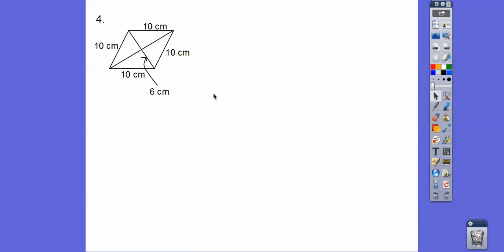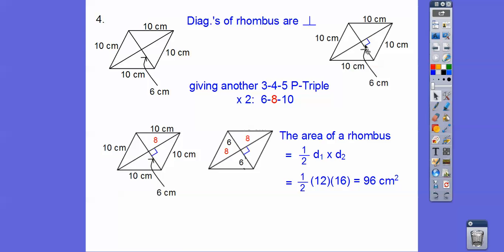Alright, so this one is a rhombus. It's a rhombus because all four sides are congruent. And when it's a rhombus, the diagonals are perpendicular. So it's a right angle. So we get another 3, 4, 5 P-triple. This is 6, we'll find out this is 8, and this is 10. 3 times 2, 4 times 2, 5 times 2. So that missing side right there is 8.